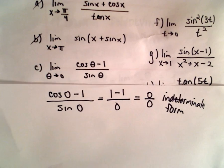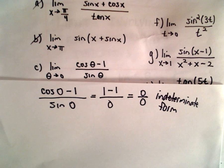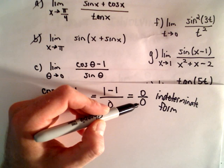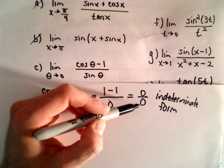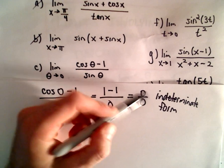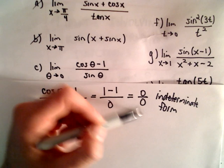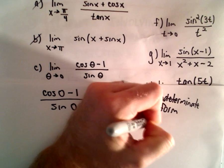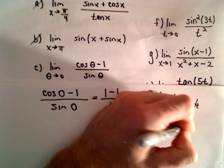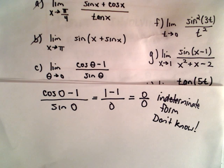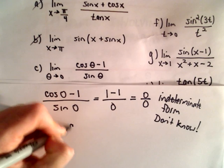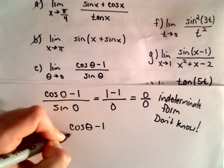An indeterminate form means we simply can't determine the value of this limit. We can't say that since there's a 0 in the denominator it's undefined — we can't say anything about it. It may turn out to be 0, some type of infinity, or a specific finite number. So when we have an indeterminate form, we typically do some sort of algebraic manipulation, or with trig, we'll often use trig identities.